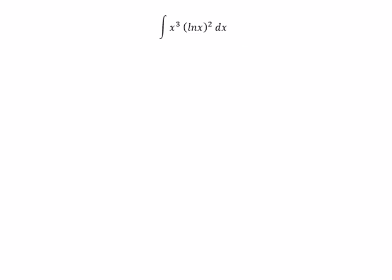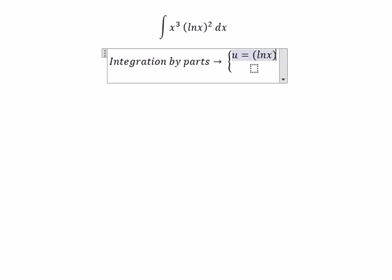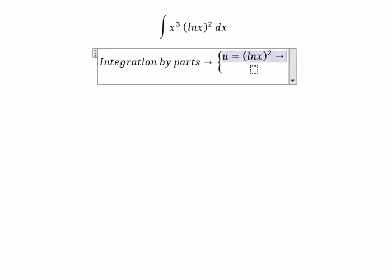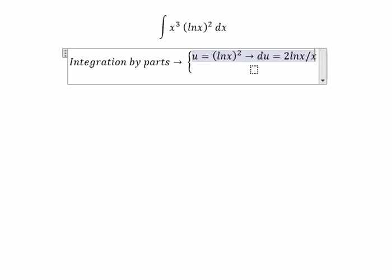We need to use integration by parts. So we have u and dv. u equals to ln x to the power of 2. du equals to 2 ln x over x dx.